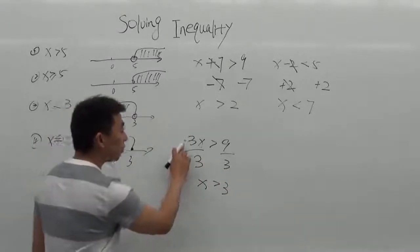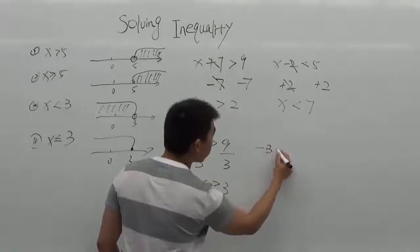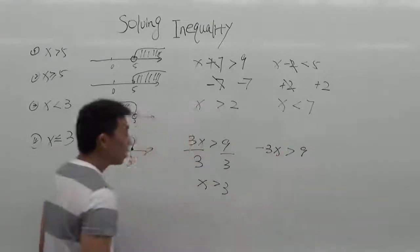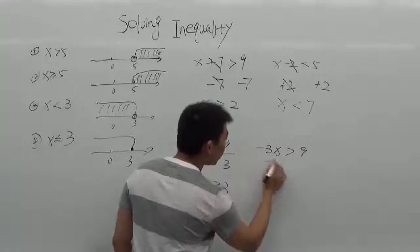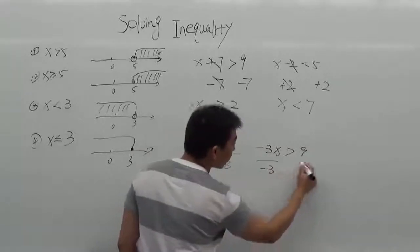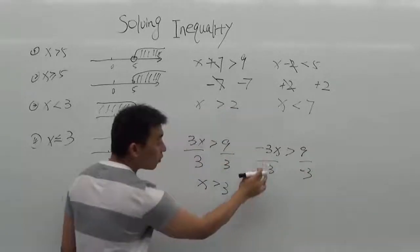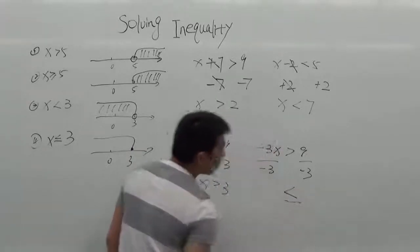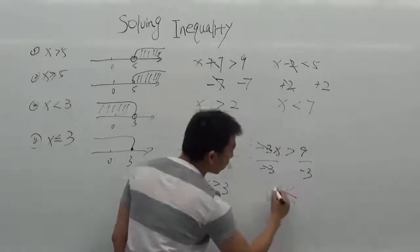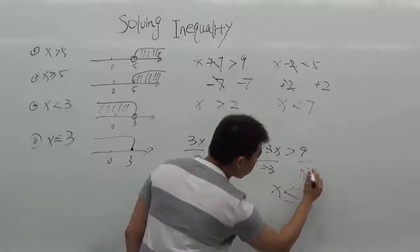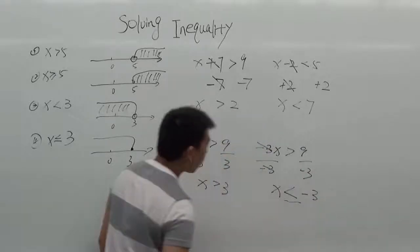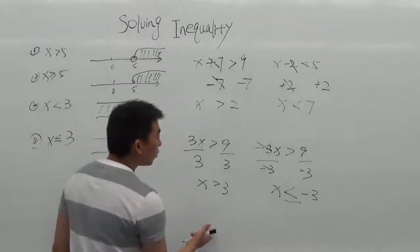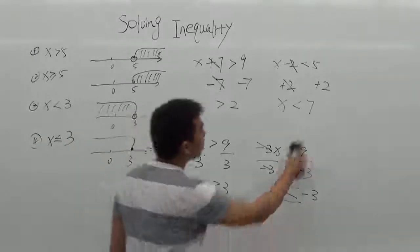But when there is a negative number — let's say negative 3x greater than 9 — it's the same process: divide by the number in front of x. However, because this is a negative number, you need to change the inequality sign. Dividing both sides by negative 3, you get x less than negative 3.